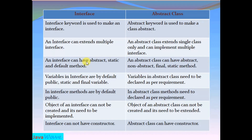An interface can have abstract, static, and default methods — but only after Java 8. Before Java 8, only abstract methods were allowed. An abstract class can have abstract, non-abstract, final, and static — all kinds of methods.